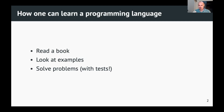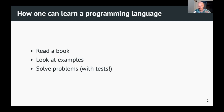There are some basic ways to learn a new programming language. You can read a book, you can look at examples — especially if you know some other programming language. Sometimes you don't want to read a long text; you just look at examples and get ideas and go with that. And of course you can solve problems. Usually when we're talking about solving problems, it's a good idea to have some tests to check if you got it correctly.